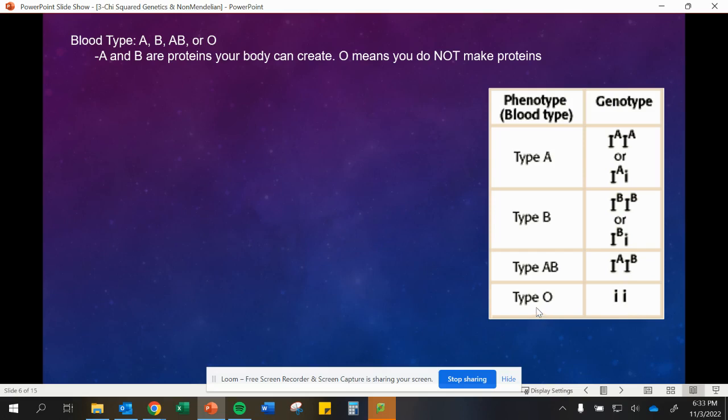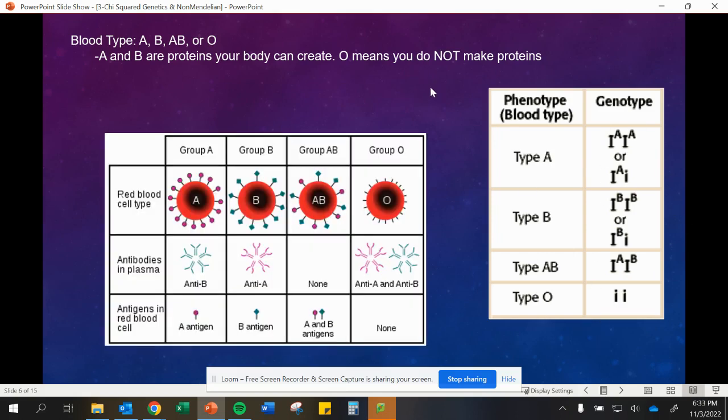Our genotypes we denote by dominant or recessive. O is the only one that's completely recessive. To get AB, we have to have an A and a B allele. To get A or B blood, we have two options. We could be homozygous or heterozygous, where we have that i showing that no protein or that recessive is there. This is usually how we would denote our genotypes so that we can set up our Punnett squares. This is going to be dealing with A, B, and AB blood having those antigens present on them, and they're going to be identified by different antibodies in the blood plasma.